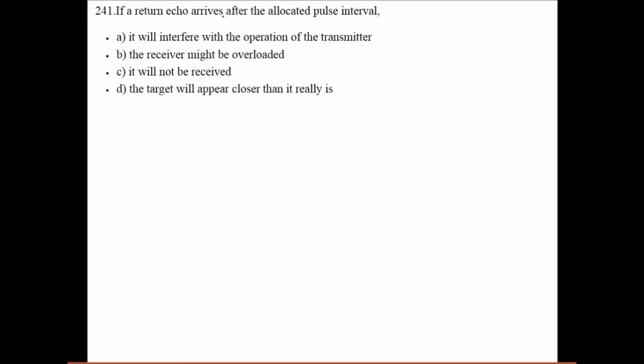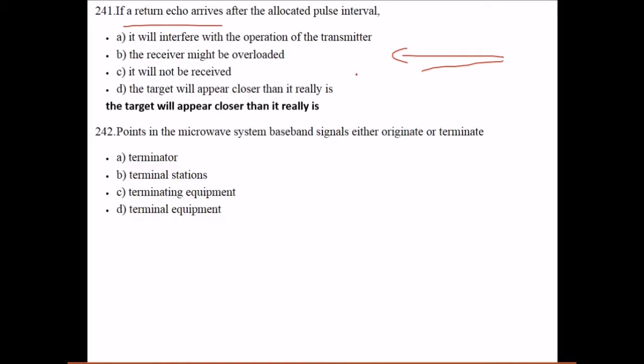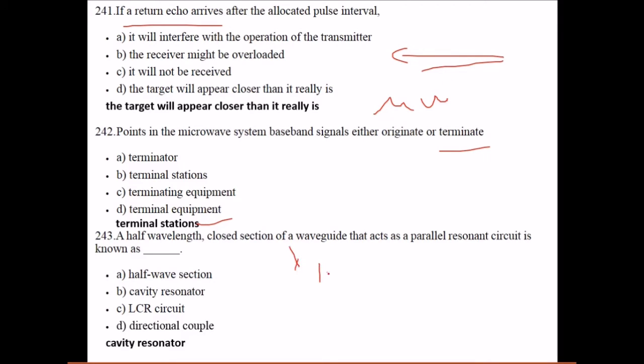The duplexer is used to allow one antenna to be used for reception or transmission without mutual interference. A type of protection switching arrangement where each working radio channel has a dedicated backup or spare channel is hot standby. If a return echo arrives after the allocated pulse interval, the target will appear closer than it really is. The half-wavelength closed section of a waveguide that acts as a parallel resonant circuit is known as a cavity resonator.